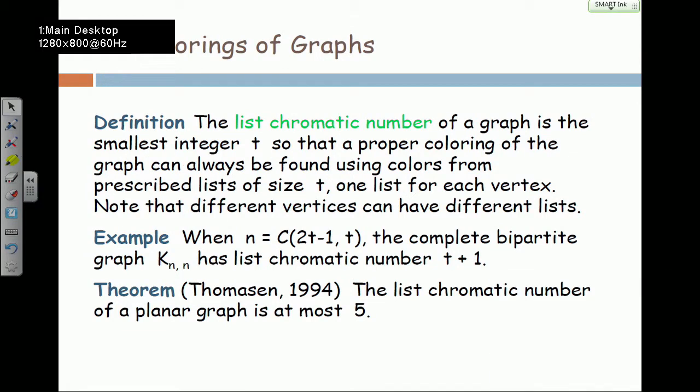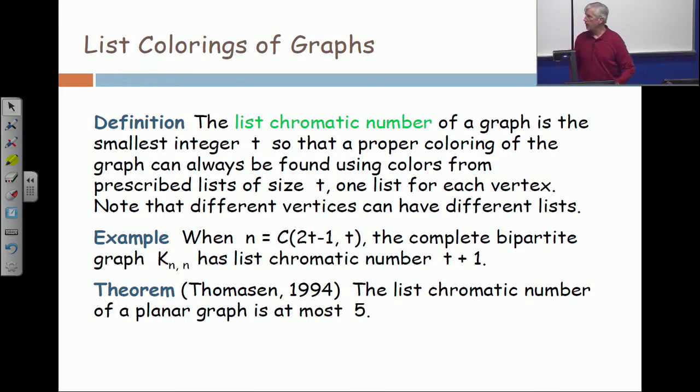And now, the last result that I want to mention here is a famous result of Karsten Thomason. His result is that the list chromatic number of a planar graph is at most five.